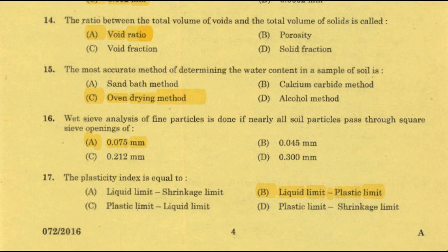Additional water content determination methods include radiation method and torsion balance moisture method. The oven drying method is the standard lab method and the most accurate method. The sand bath method uses the same drying principle but drying of soil is done using a sand bath. The alcohol method dries the soil using methylated spirit.